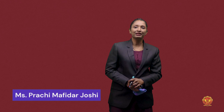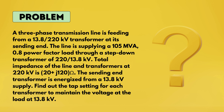Hello everyone. Today we are going to solve the best question on the tap changing transformer. How do we find out the tap setting? The question is: a 3-phase transmission line is fed from a 13.8/220 kV transformer. At its sending end, the line is supplying a 105 MVA, 0.8 power factor load through a step-down transformer of 220/13.8 kV. Total impedance of the line and transformer at 220 kV is 20 + j120 ohms. The sending end transformer is energized from a 13.8 kV supply. Find the tap setting for each transformer to maintain the voltage at load at 13.8 kV.